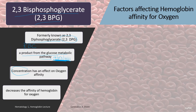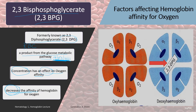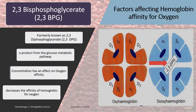The concentration of 2,3-BPG has an effect on the oxygen affinity of hemoglobin — a decreasing effect. When 2,3-BPG is present, it is attached to the globin chain, so oxygen cannot bind. But in the absence of 2,3-BPG, oxygen can now bind to hemoglobin. Let's say this is your hemoglobin, the one in blue — with 2,3-BPG present, oxygen cannot bind, and on the left side where there is no more 2,3-BPG, oxygen can now bind.